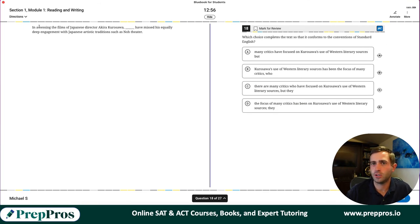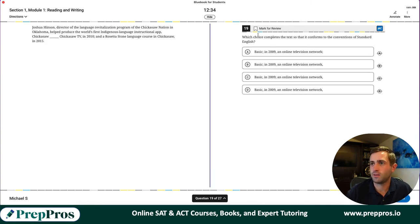More standard conventions. And same exact patterns. So I immediately can spot that this is a misplaced modifier. In assessing the films of Japanese director Akira Kurosawa, who or what could be assessing the films could only be critics. None of the other ones make any sense. This is a misplaced modifier question. Get in all the same writing and language stuff here.